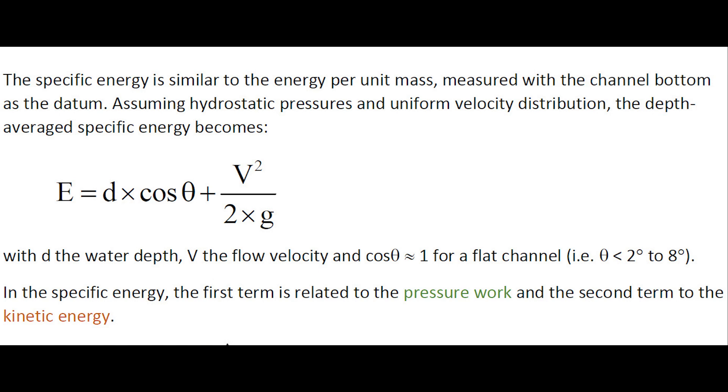Assuming hydrostatic pressure and uniform velocity distribution, the depth-averaged specific energy becomes E = d×cosθ + V²/(2×g)